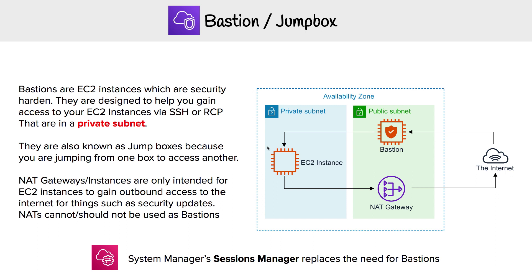We talked about how we could use NAT gateways or NAT instances to gain access to the internet for our EC2 instances that live in a private subnet. But if you wanted to SSH into that EC2 instance, it's in a private subnet, so it doesn't have a public IP address. What you need is an intermediate EC2 instance that you're going to SSH into, and then you're going to jump from that box to this one. That's why bastions are also known as jump boxes.